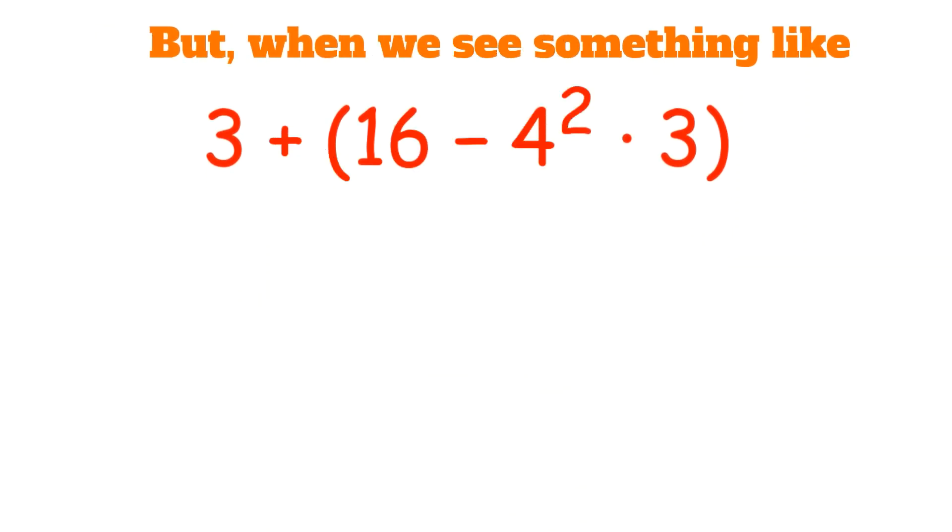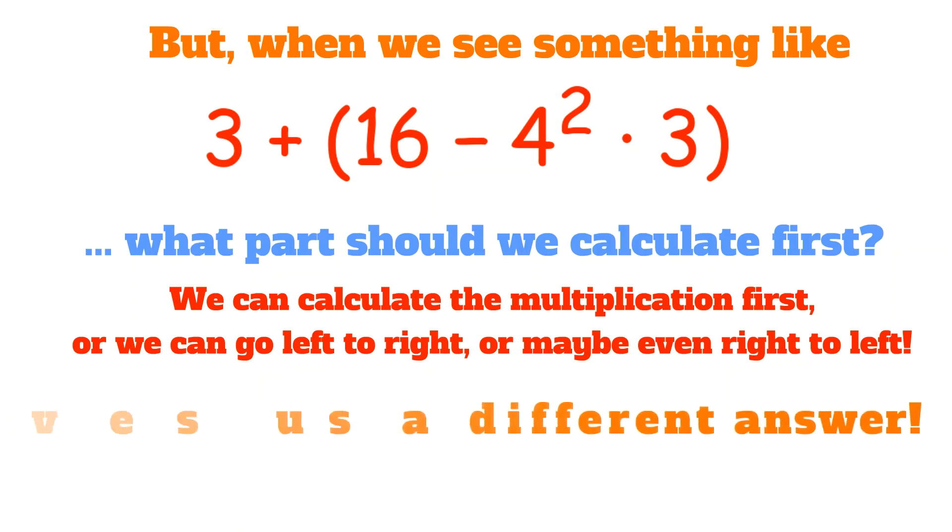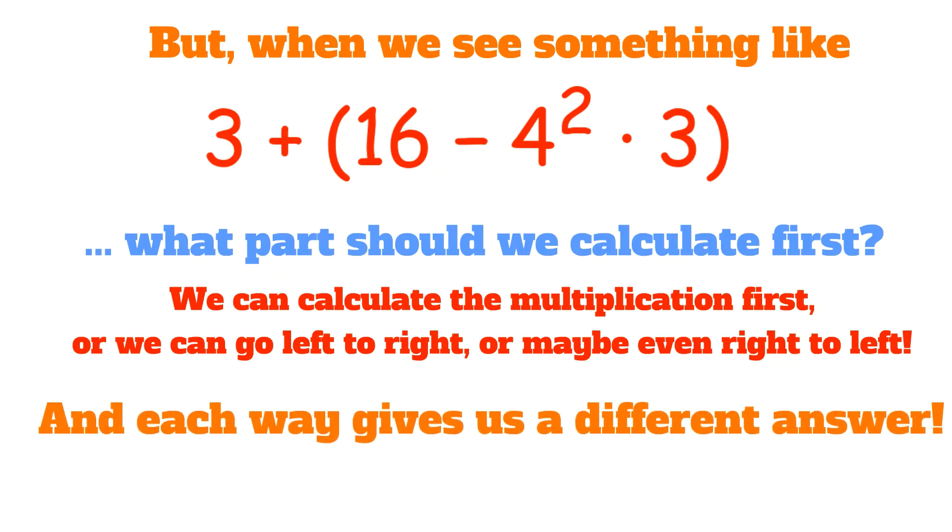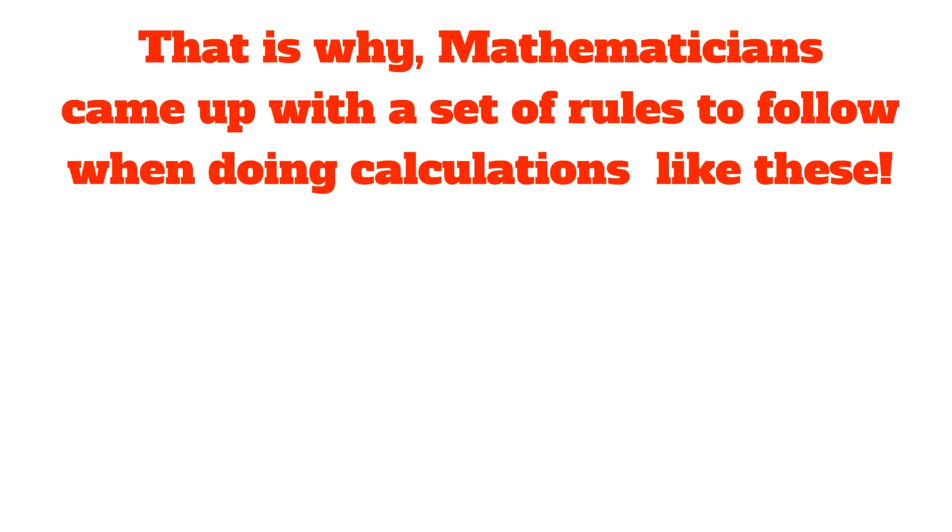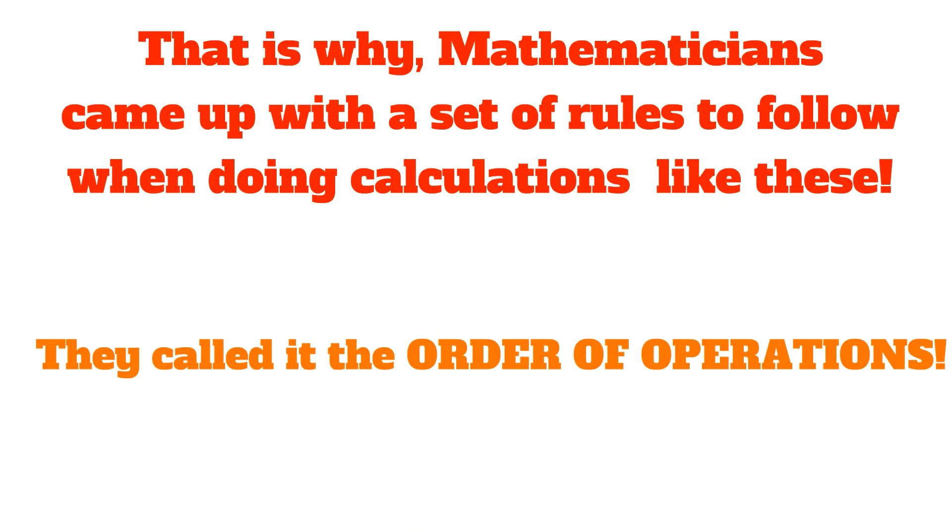But when we see something like 3 plus 16 minus 4 squared times 3, what part should we calculate first? We can calculate the multiplication first, or we can go left to right, or maybe even right to left. Each way gives us a different answer to this problem, and only one of them is correct. That is why mathematicians came up with a set of rules to follow when doing calculations like these. They call it the order of operations.